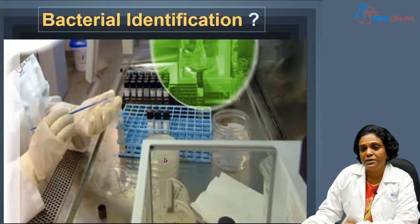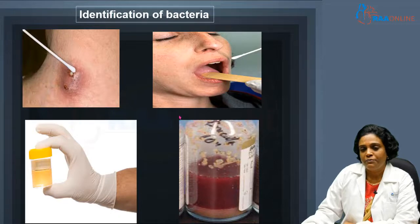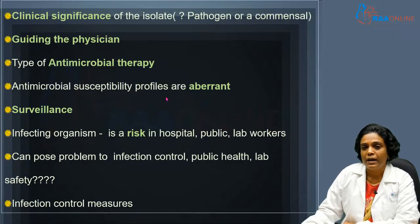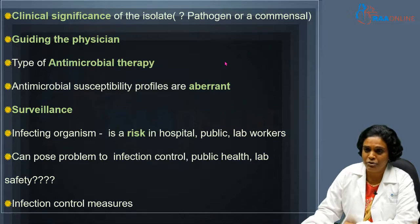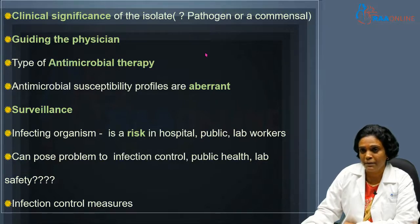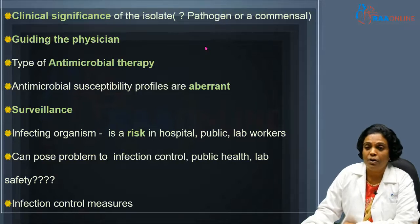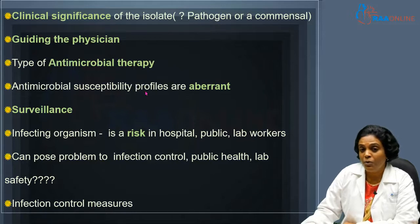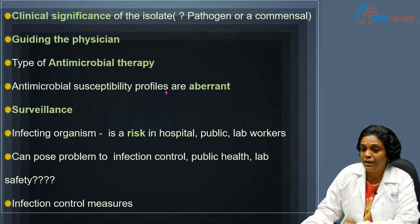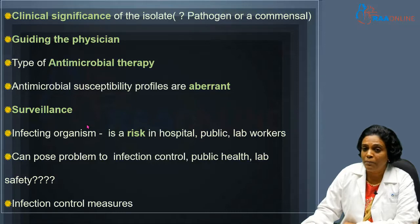Now why do we need bacterial identification? It definitely helps us to identify the causative agent and helps us to know the clinical significance of the isolate — say whether it is a pathogen or a commensal. For example, if you take a sputum sample, it will be loaded with commensal bacteria. So only when you identify the bacteria will you be able to know whether the isolate is a pathogen or a commensal. This will guide the physician whether to start antimicrobial therapy. We know that these bacteria have aberrant antimicrobial profiles, so identification is very important to carry out susceptibility testing and to give appropriate treatment to the patient.